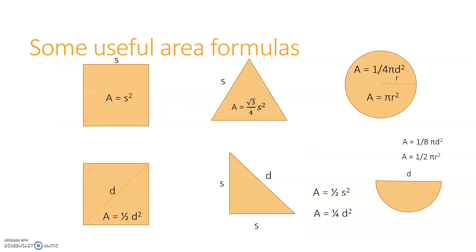In order to do the math today, some area formulas that you should either know or have handy are: the area of a square (whether you know the diagonal or the side length), the area of an equilateral triangle, the area of an isosceles right triangle (whether you know the side length or the diagonal), the area of a circle, and the area of a semicircle. These are formulas you should either be able to derive or memorize.